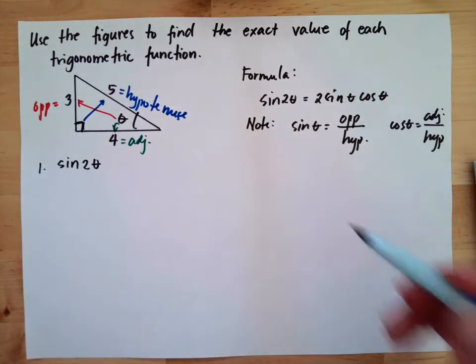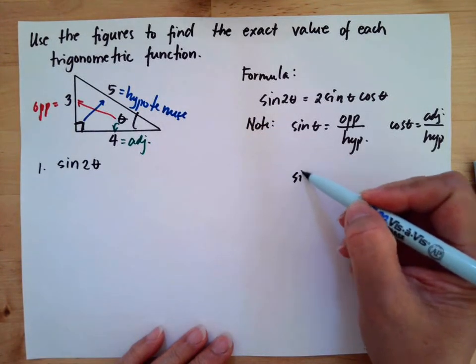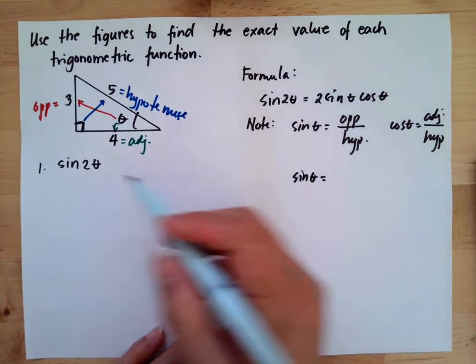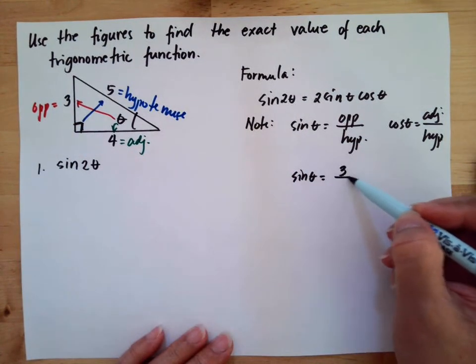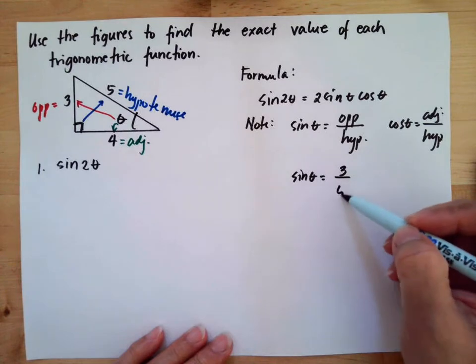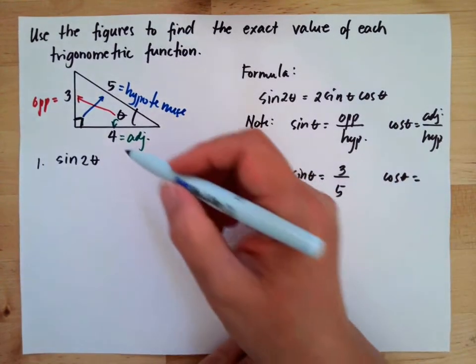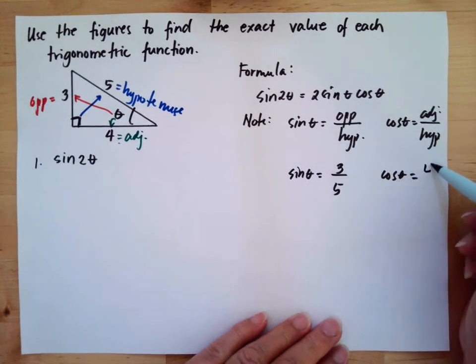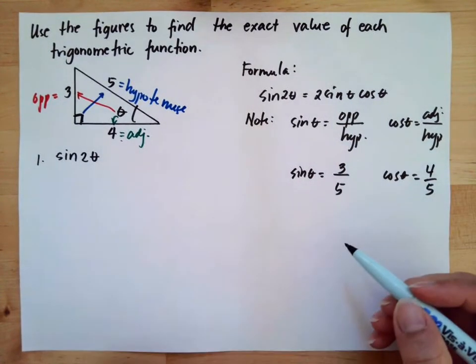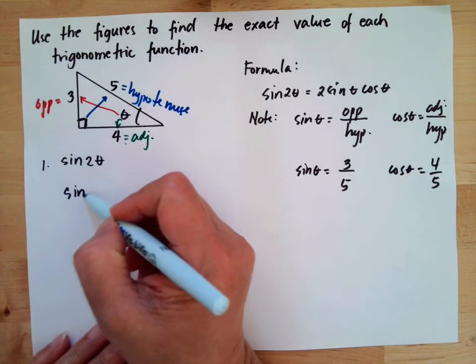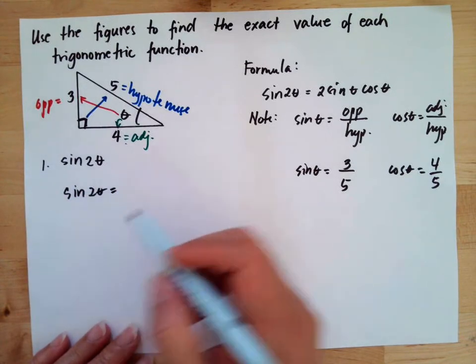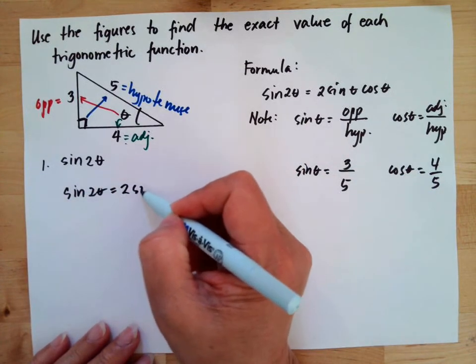So our sine theta equals the opposite, 3, over the hypotenuse, 5. The cosine of theta is the adjacent, 4, over the hypotenuse, 5. Now we will substitute these given values in our formula.